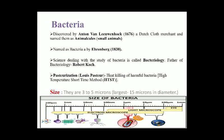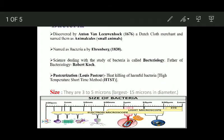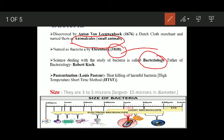Bacteria were first of all discovered by Anton van Leeuwenhoek in the year 1676. He was a Dutch cloth merchant and he named these bacteria as 'animalcules' or small animals. Then in the year 1838, Ehrenberg coined the term 'bacteria.' The science that deals with the study of bacteria is known as bacteriology, and owing to the great contributions of Robert Koch in this field, he is named as the father of bacteriology.